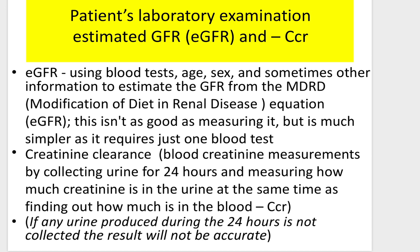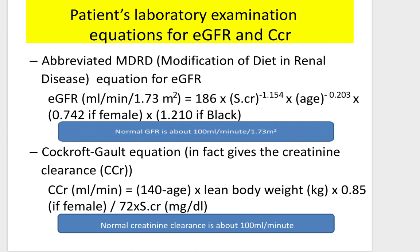Creatinine clearance is measured by collecting urine for 24 hours and measuring creatinine in both the urine and the blood simultaneously. If any urine produced during the 24 hours is not collected, results will not be accurate. The abbreviated MDRD equation for eGFR and the Cockcroft-Gault formula are two equations used — the Cockcroft-Gault is simpler but less accurate.